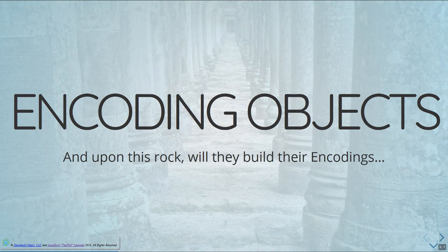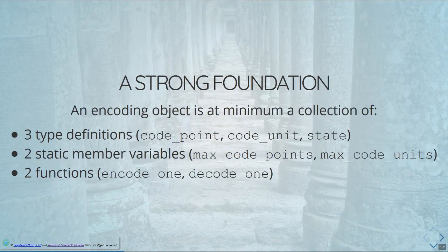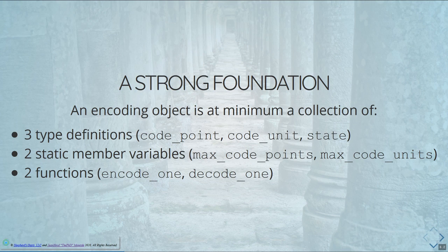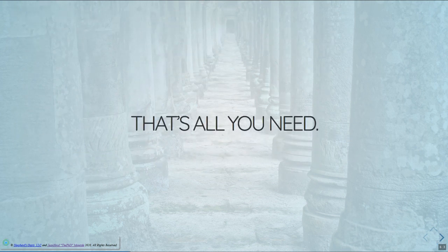Now that we've got past some of the constraints and issues, let's talk about encoding objects and how this would be useful. An encoding object is at minimum a collection of three type definitions — code point, code unit, state — two static member variables which are integers that tell you the maximum number of code points and the maximum number of code units that can be output by a single operation. Then you have two operations: encode one, which can take some code points and output some code units in the specified encoding, and decode one, which takes code units of that encoding and outputs code points in UTF-32. That's basically how that works. This is the hill I'm going to die on. This is all you need — period, point blank. You only need those seven things. That's lucky seven — you can build literally everything on top of that.